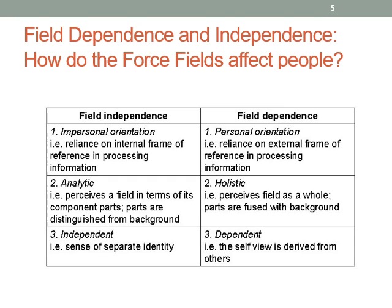Field dependent people tend to have a personal orientation — they rely on external fields to process information. When they come into the party to look for their friend, because they're perceiving the field as a whole, they're going to have a harder time pulling out and ignoring all that background to find their friend. Their sense of self is derived from others, so this person is dependent on others to form their sense of self.